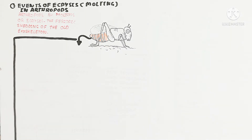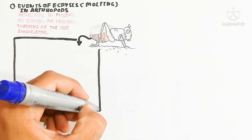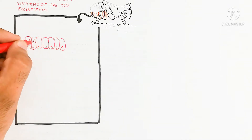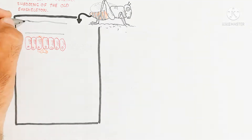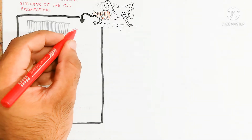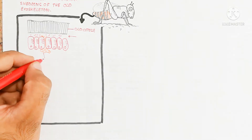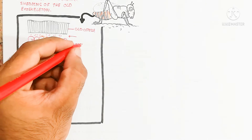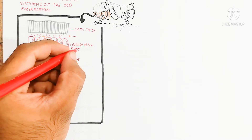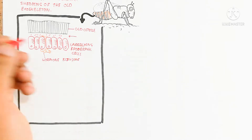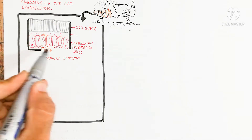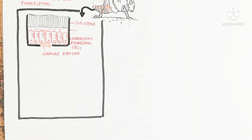This exoskeleton contains an old cuticle in the upper part, and the inner side is the epidermis, which contains living cells. The old cuticle basically contains dead cells, and it is made up of a polysaccharide. This polysaccharide is chitin, and chitin is also a component of the cell wall of fungi.